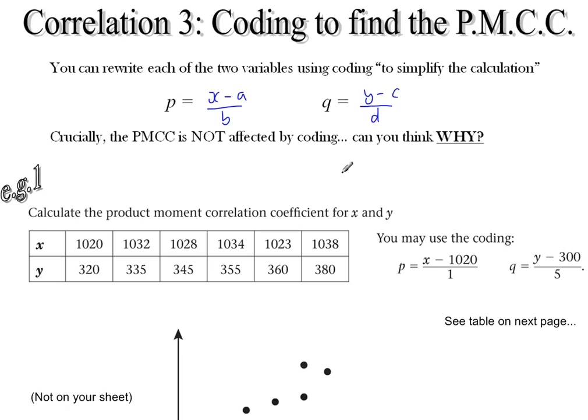The good news here is that when you have coded data and you find out the product moment correlation coefficient, so R, which in this chapter is basically the main thing we're going to calculate, it's the same for the coded data as it would be for the original data.